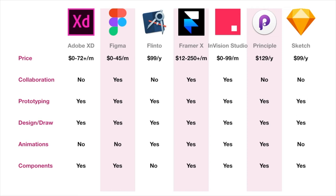Components — by components I mean can you reuse things like buttons, icons, tab bars, and nav bars? Is there a symbol library where things will update everywhere if you update them somewhere? Sketch has this, as do Principle, Envision, Framer, Figma, and XD. But Flinto does not — Flinto is more focused on the little animations you want to do.